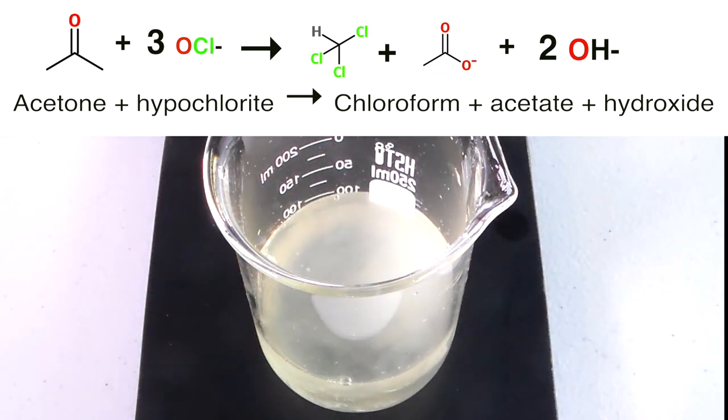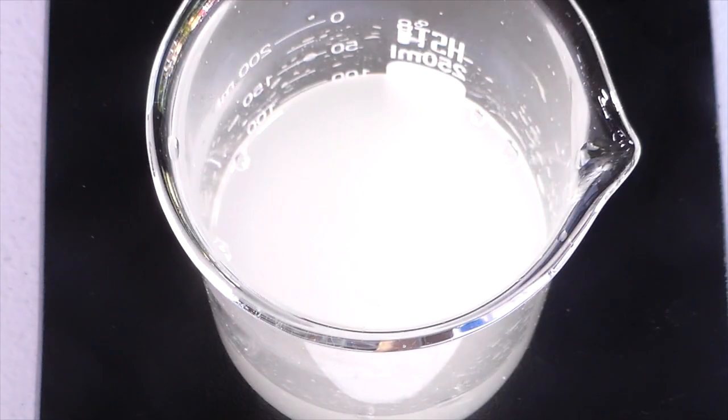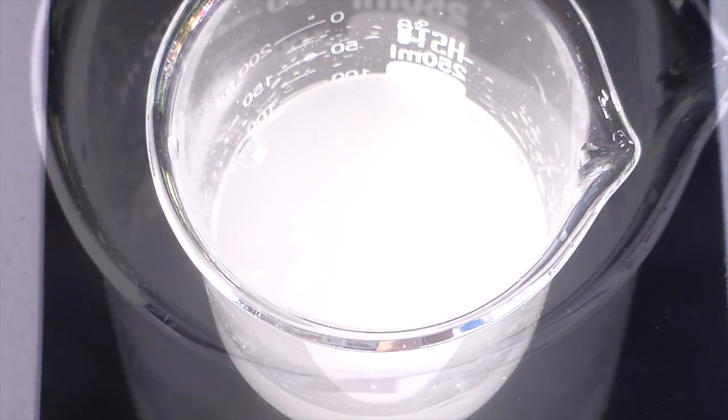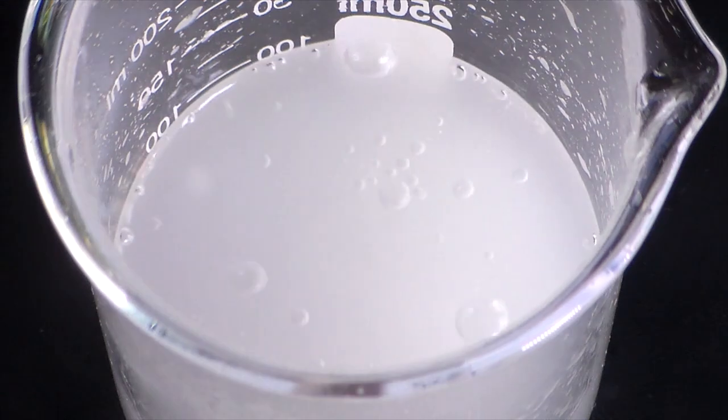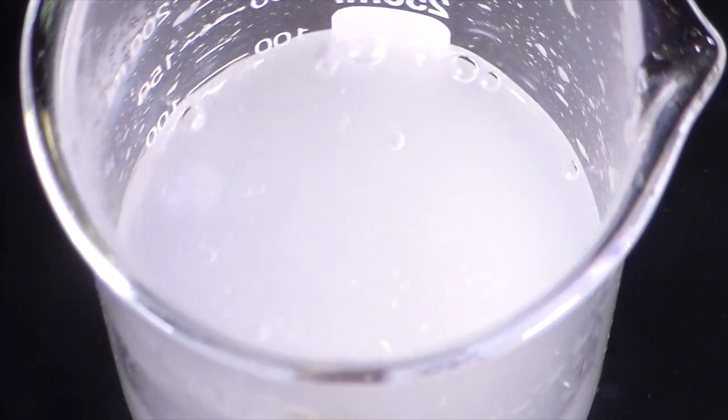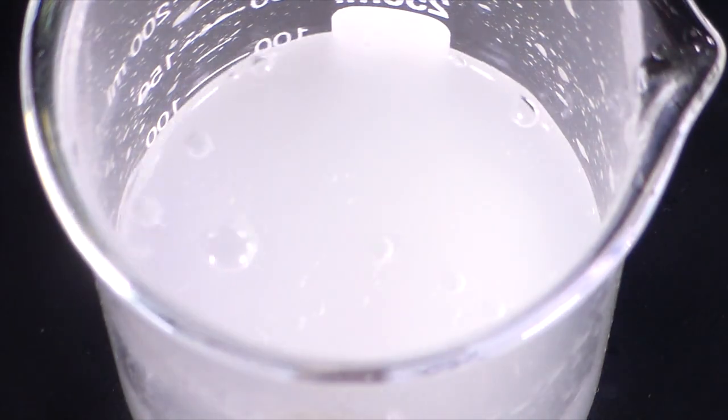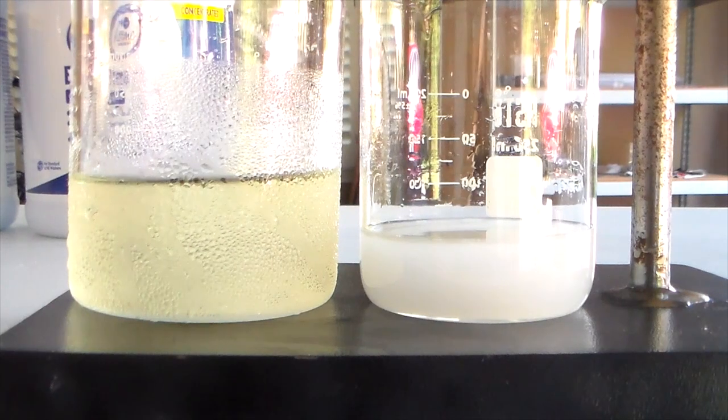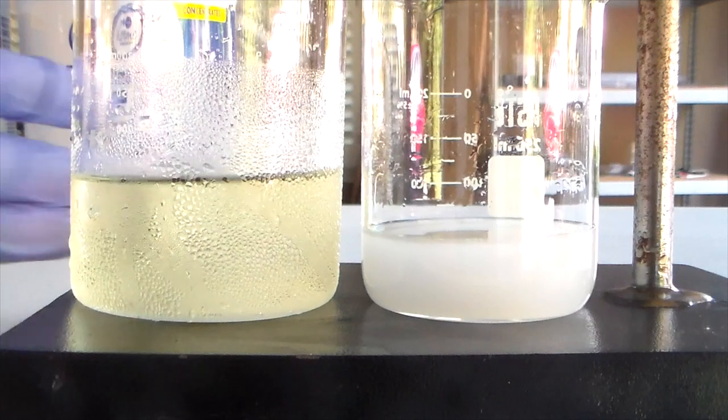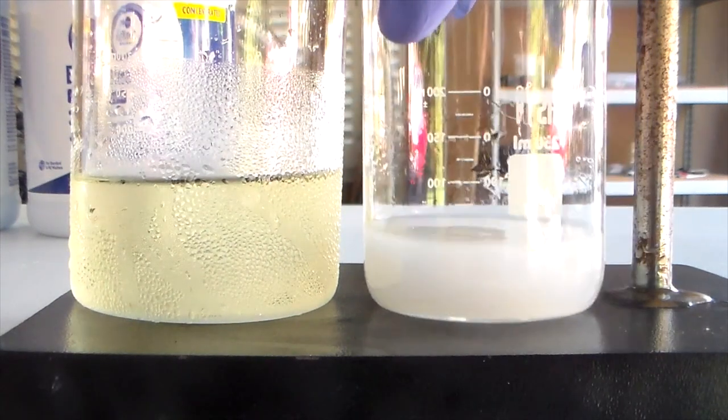As the reaction progresses, you can see the solution becoming white and cloudy due to chloroform in suspension. As a side note, this is a good demonstration to show why you should chill the bleach before adding the acetone. In this case, the mixture got hot enough to boil the chloroform produced. This would ultimately lead to a loss of yield and also a lab full of chloroform vapors.